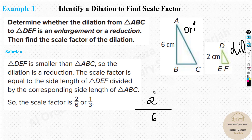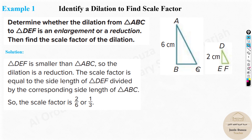The ratio is always the dilated image divided by the original image, which is 2 by 6. If you calculate, you get one-third, or 0.333. Whenever the ratio is less than 1, it means it's a reduction; when it's greater than 1, it's an enlargement. So this is a reduction with scale factor 1/3.